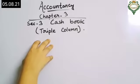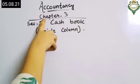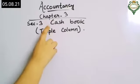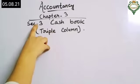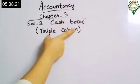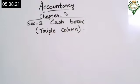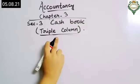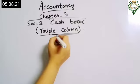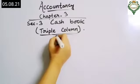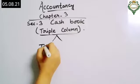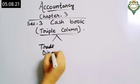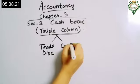Good morning class. Today we shall be continuing Chapter 3 — Recording of Transaction and Preparation of Trial Balance — in which we are doing Section 3: Cashbook. We were doing the triple column cashbook, and we will continue that only and get to know much about trade discount and cash discount.